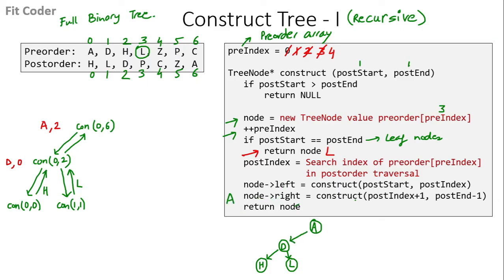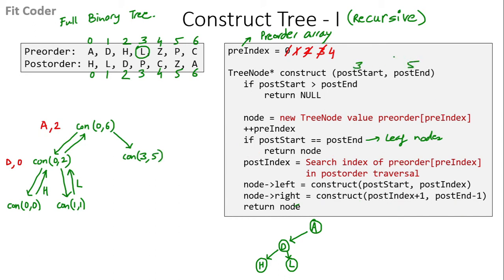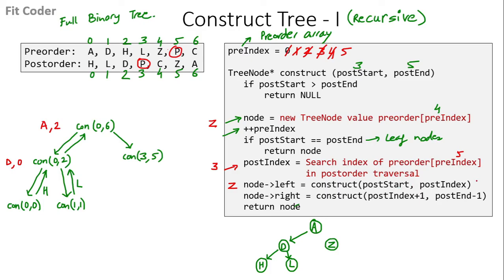For the right of A, we call construct(3, 5), since post-index was 2 at A, so the first parameter is post-index+1=3 and the last parameter is 6-1=5. Now post-start=3 and post-end=5. We create a new node with the 4th index of pre-order, which is Z. We increment pre-index to 5. We search the 5th index of pre-order, which is P, in the post-order traversal. The index of P is 3, so post-index becomes 3. For the left of Z, we call construct(3, 3).